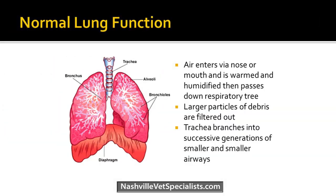For normal lung function — these are human lungs, obviously, but you get the basic gist. Air enters through the nose and mouth, it's warmed and humidified, then passes down the respiratory tree. Larger particles and debris are filtered out. Once you get down to the distal trachea, it branches into successive generations of smaller and smaller airways until you eventually get to the alveolus.